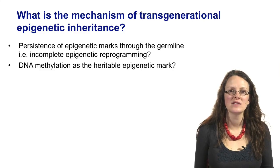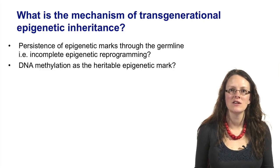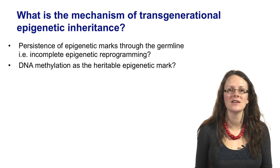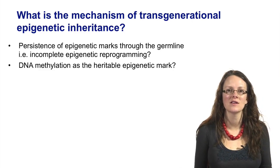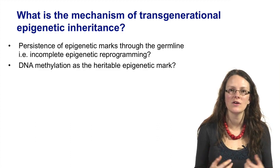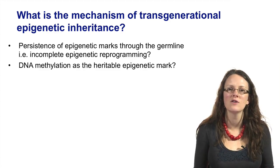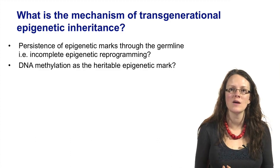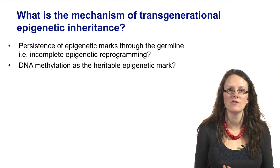Now that we've been through some examples of transgenerational epigenetic inheritance through the gametes, where we really do believe there is transgenerational epigenetic inheritance through the gametes, we can begin to consider how this might occur at a mechanistic level. Why would we have this apparent transmission or memory of the phenotype and epigenotype of the parent?